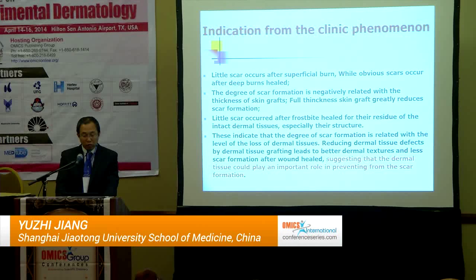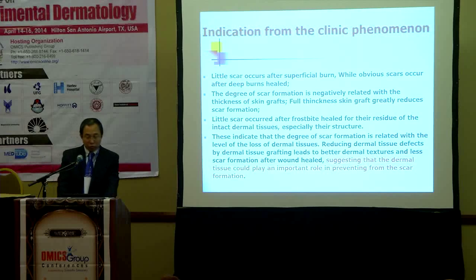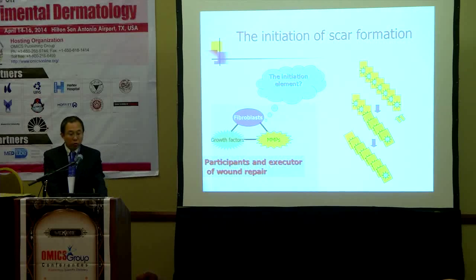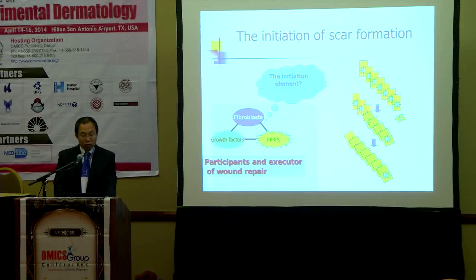This indicates that the degree of scar formation is related to the loss of dermal tissue. Reducing dermal tissue defects by dermal tissue grafting leads to better dermal tissue and less scar formation after healing, suggesting that the dermal tissue could play a positive role in preventing scar formation. We know that fibroblasts, growth factor cytokines, MAPKs, and ECM are participants and executors of wound repair.